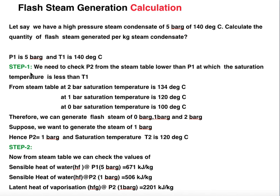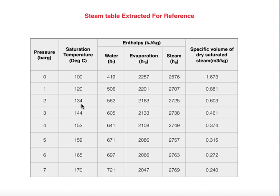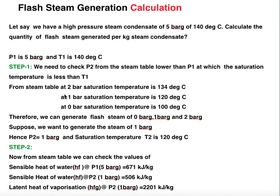From the steam table, at 2 bar gauge the saturation temperature is 134°C, at 1 bar gauge it is 120°C, and at 0 bar gauge it is 100°C — all lower than 140°C. So we can generate flash steam at 0, 1, or 2 bar gauge. Suppose we want to generate steam at 1 bar gauge; therefore P2 is selected as 1 bar gauge, and the saturation temperature T2 is 120°C.